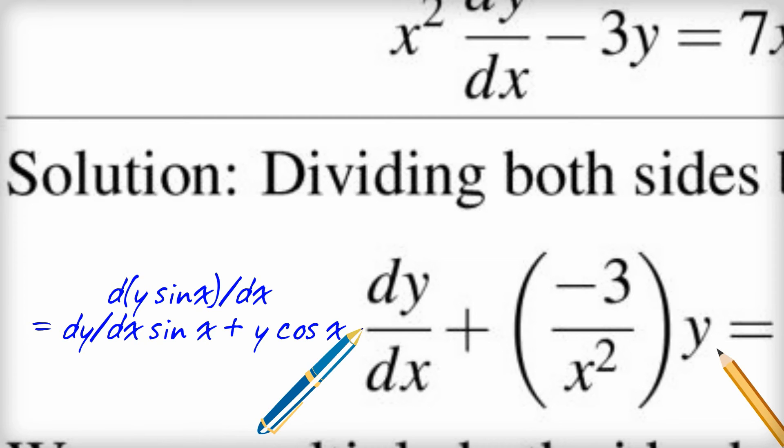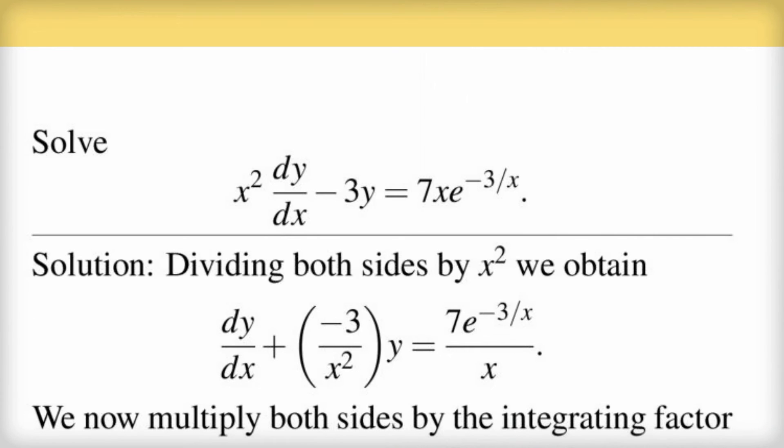So someone worked out, someone cleverer than me, worked out precisely what needs to be multiplied by, both sides by, so that we actually get the results of the product rule. In other words, so that we can then crystallize the left hand side or shorten the left hand side by using the product rule in reverse.